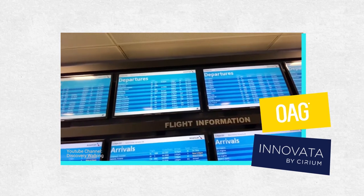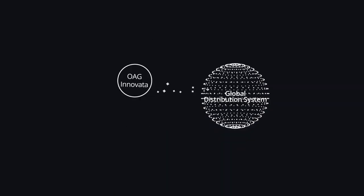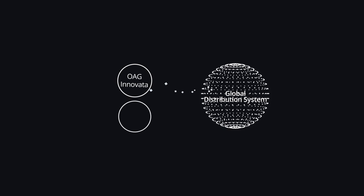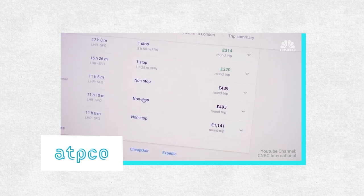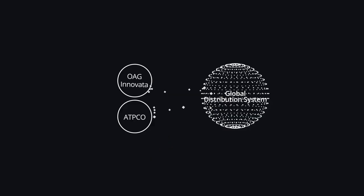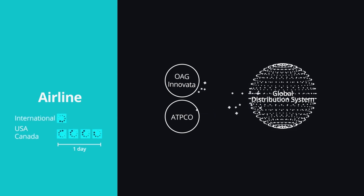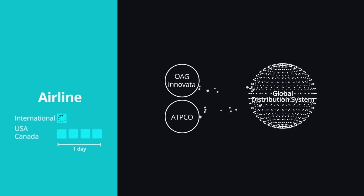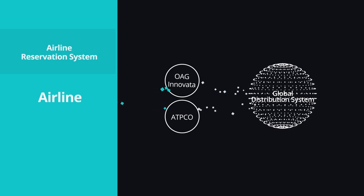Second, ATPCO — the Airline Tariff Publishing Company — that consolidates data on airfares. Carriers cooperating with ATPCO can update their prices four times per day for domestic U.S. and Canada flights, and once per day for international flights. Third, Airline Reservation Systems.